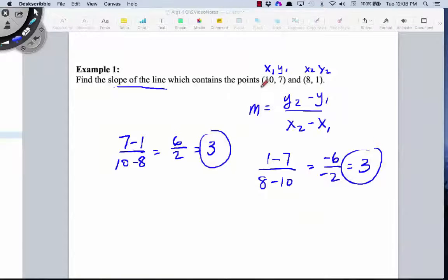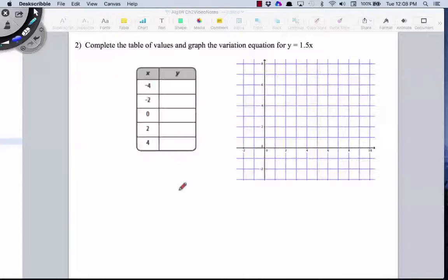So the slope of this line that passes through these two points should be equal to 3. All right, in our next example, we're asked to complete a table of values for the graph of the variation equation y equals 1.5x. So a couple of different ways you can do this, you can use your graphing calculator or you can use Desmos.